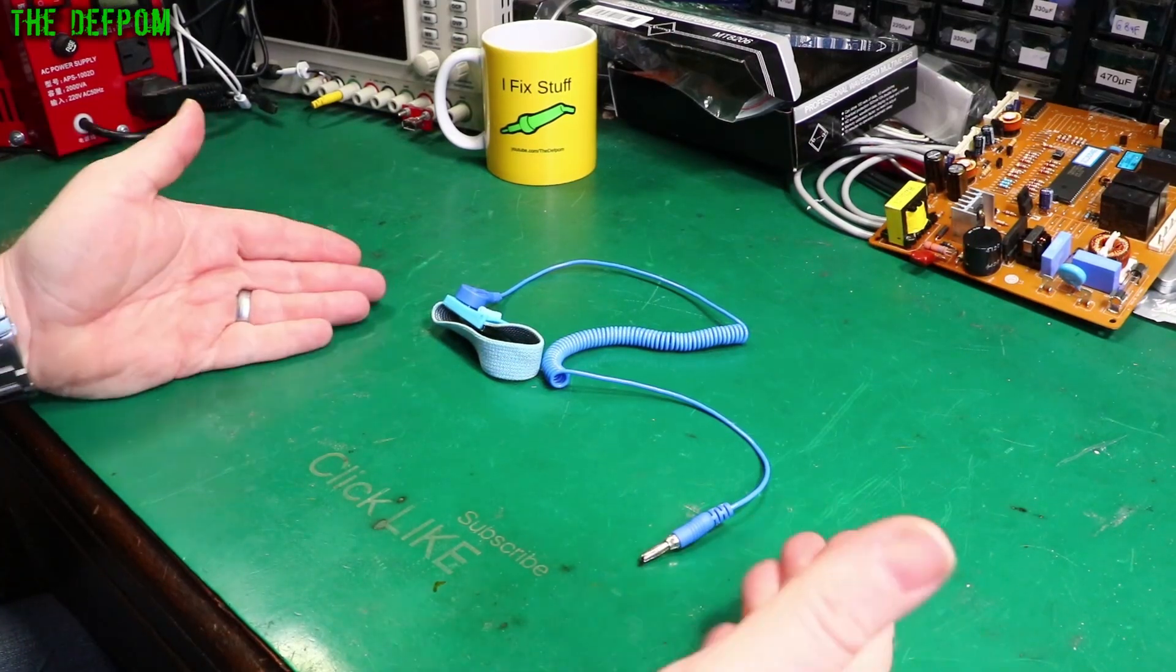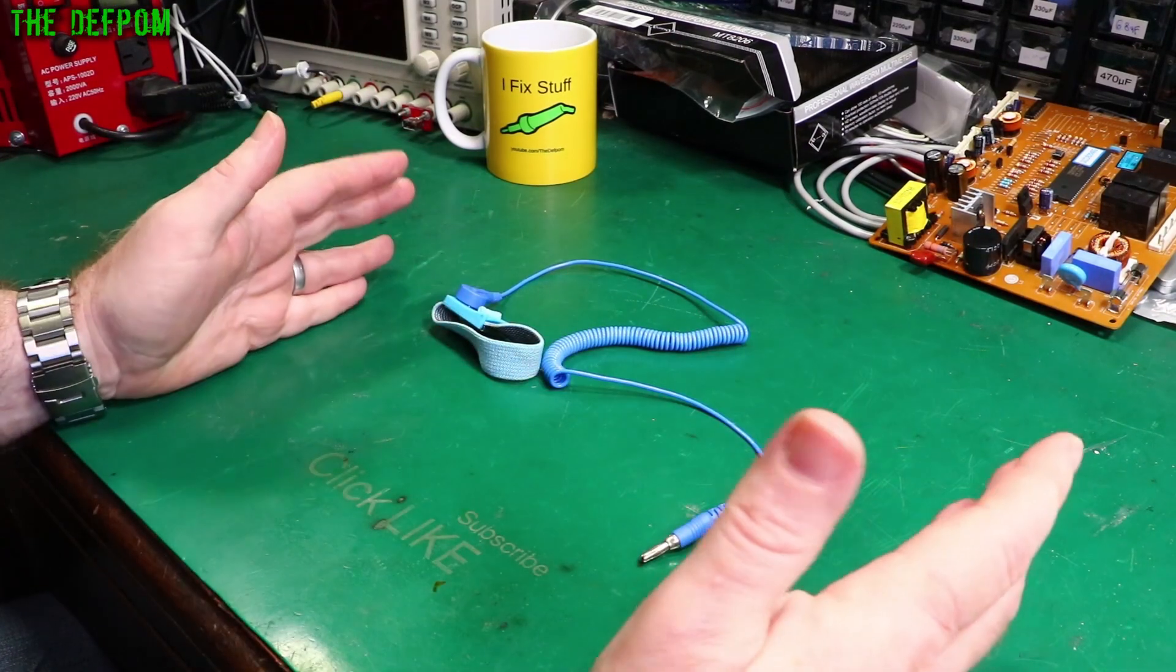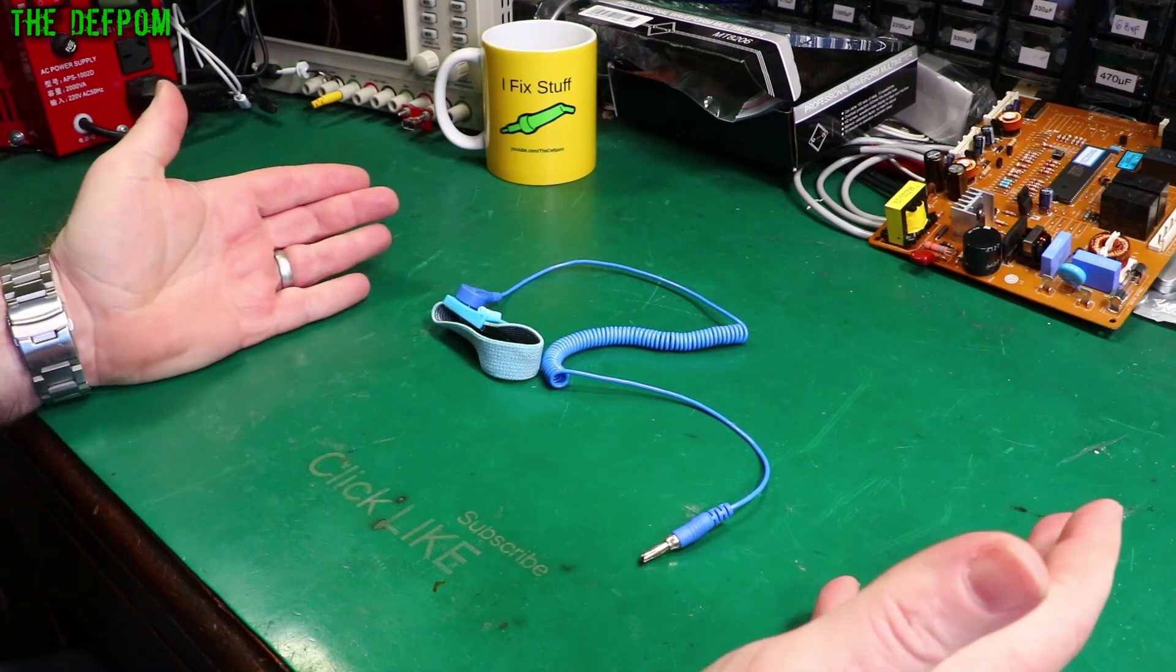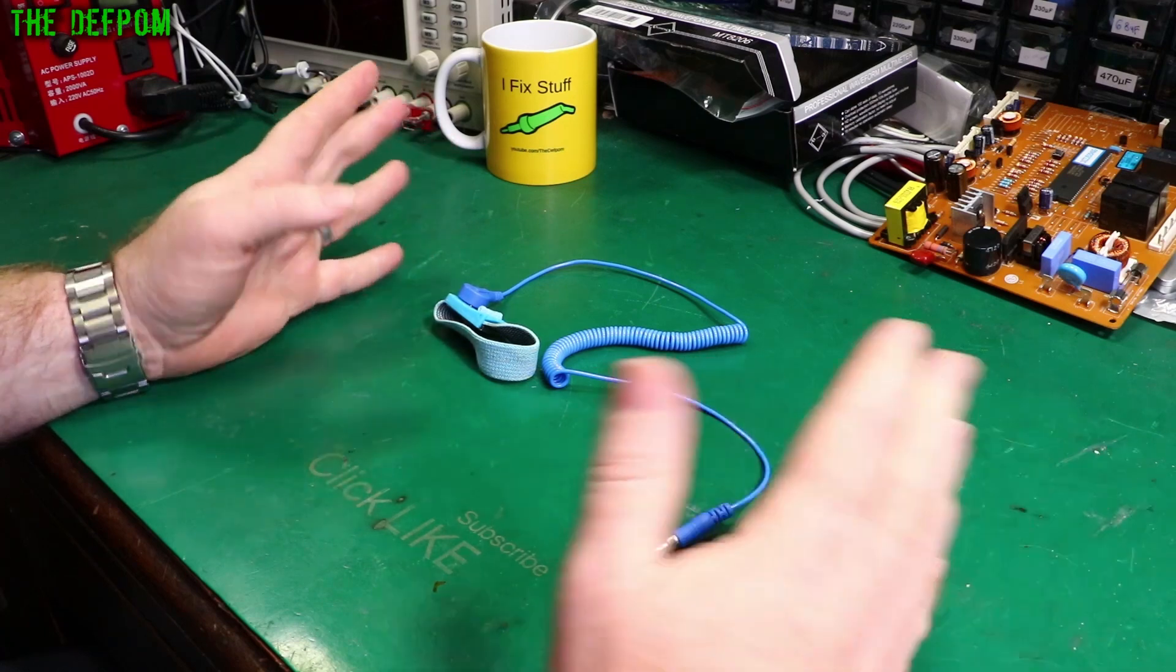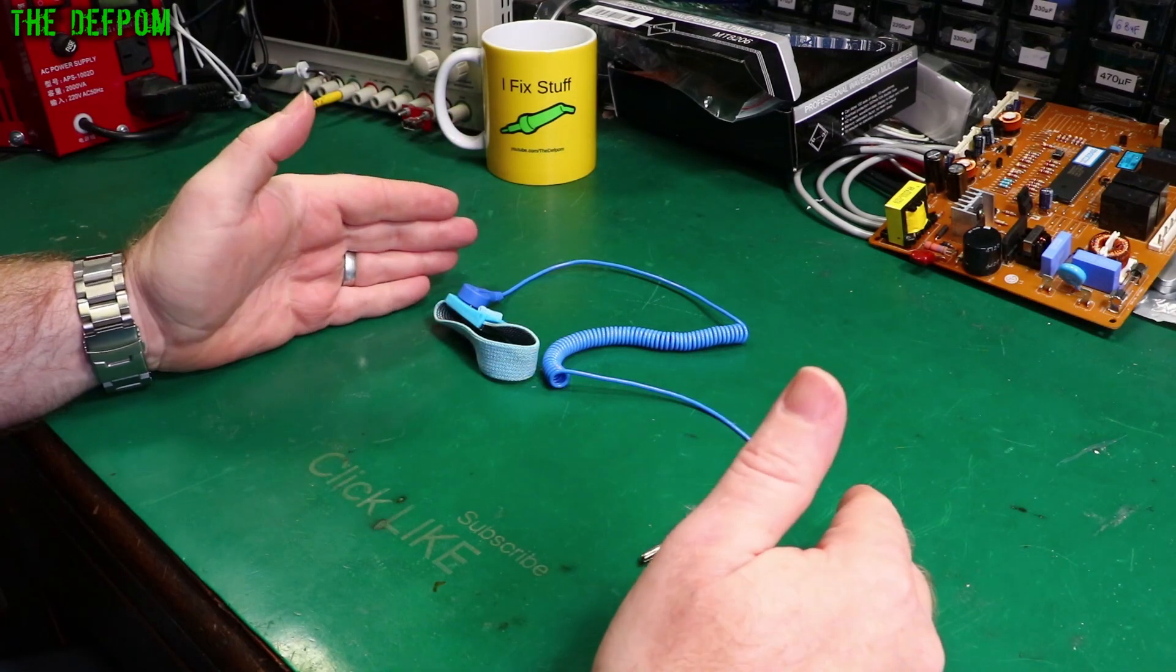So in this video I'm going to talk about anti-static stuff. Now I'm not an expert on anti-static and the principles are pretty simple. Static will destroy ICs and some transistors and MOSFETs and things like that. It's really bad news for electronics.